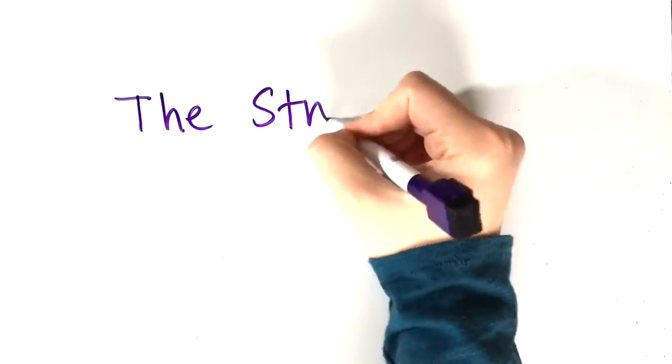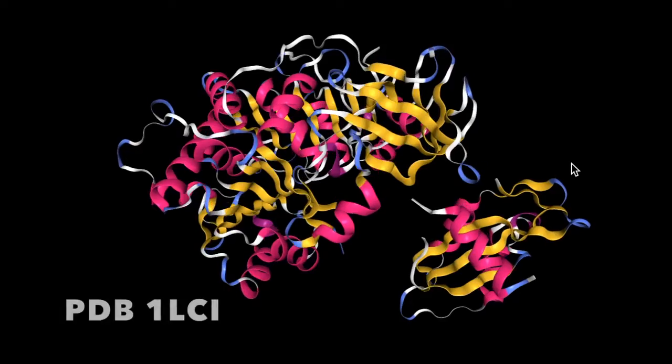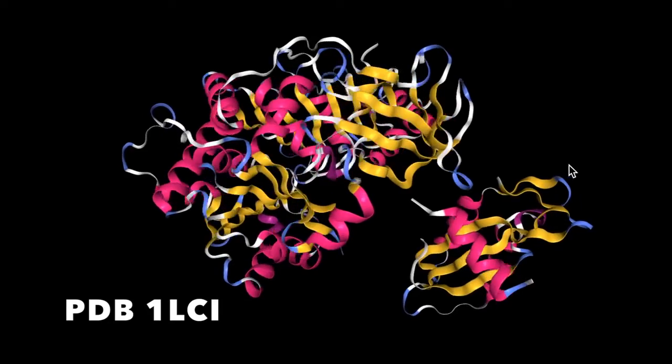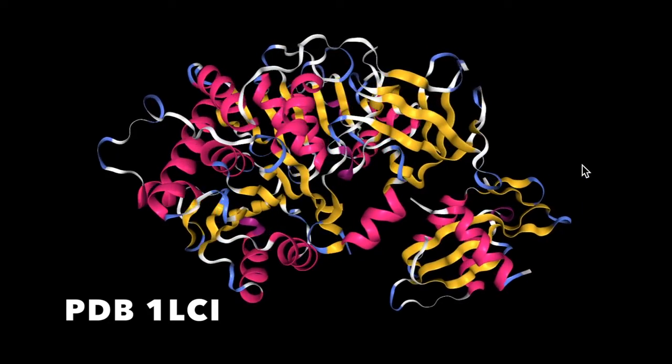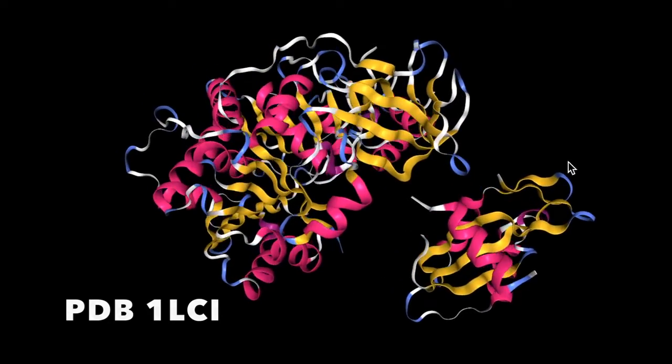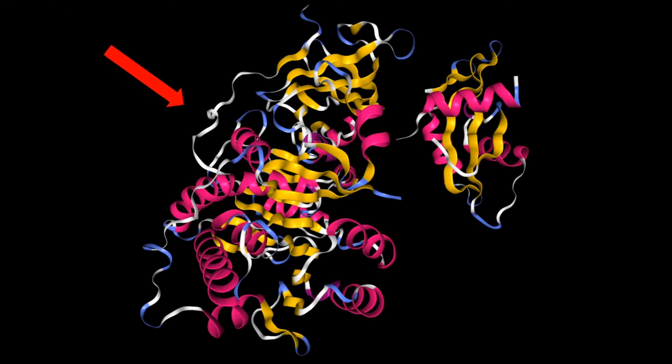Now let's take a look at the structure of firefly luciferase. This luciferase is composed of a single polypeptide chain with residues 4 through 436 making up the large N-terminal domain and residues 440 through 544 making up the smaller C-terminal domain.